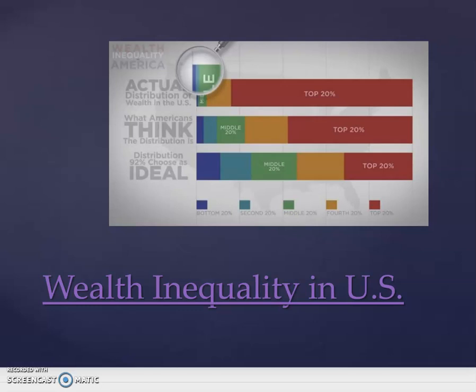Wealth inequality in the United States remains a persistent problem. The video linked on your course learning management system page — 'Wealth Inequality in the United States' — looks at the difference between what the actual distribution is, what Americans think the distribution of wealth is, and what the ideal distribution would be. There's a wide span from the ideal to what people think it is, and then even further to the actual distribution, where the middle class is barely visible.